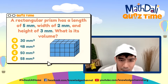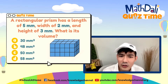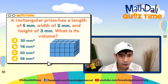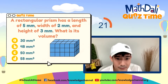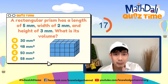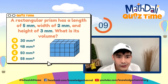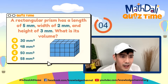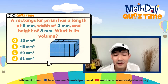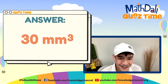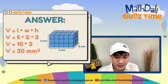Let's go to question number 4. A rectangular prism has a length of 5 millimeters, width of 2 millimeters, and a height of 3 millimeters. What is the volume? 30 seconds to analyze and answer. Go! Is it 30, 48, 50, or 58? Rectangular prism na. Tingnan muna natin yung label — millimeter, so cubic millimeter. So we have the numbers right there. Time is up. Ang tamang sagot ay 30 — Letter A, 30 cubic millimeters. Let's use our formula: length times width times height. 5 times 2 will give us 10, times 3 is 30.